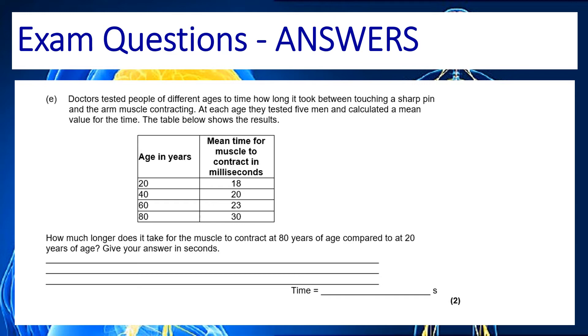Okay so here we're being asked how much longer it takes for the muscle to contract at 80 years compared to 20 years. If we go to the table above there's 80 years there's 20 years and this is the time so the numbers we've got here are 30 and 18. So if I want to know how much longer it is then I need to do a subtraction. So I'm going to do 30 take away 18 which equals 12. Now this is a slightly horrible question because the time there is given in milliseconds which is not seconds it's a thousandth of a second so we've actually got to convert so this is 12 milliseconds which is equal to 1 divided by a thousand milliseconds so slightly horrible question that one.